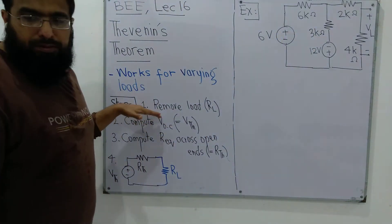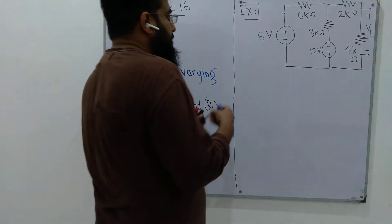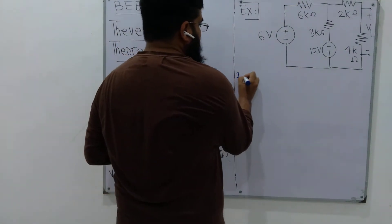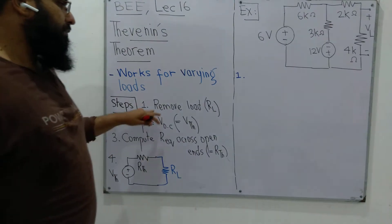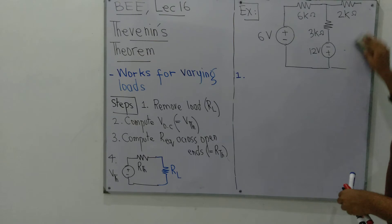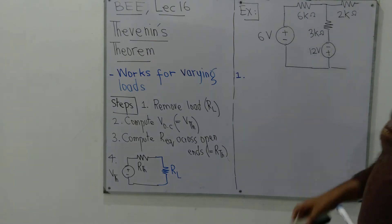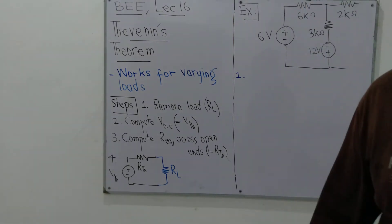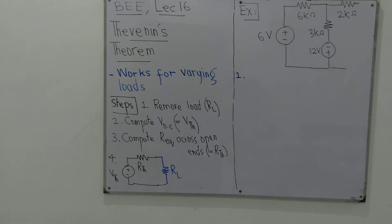First of all, step number 1: we will remove the load resistor. Let's remove it. Now instead of RL we have two open ends. So across these open ends we have to find the open circuit voltage which we also call Vthevenin.